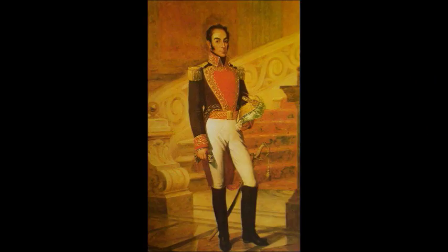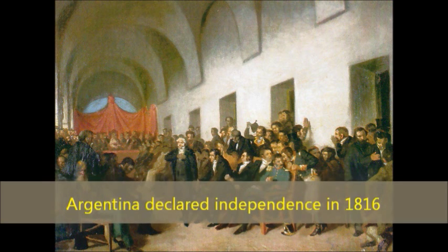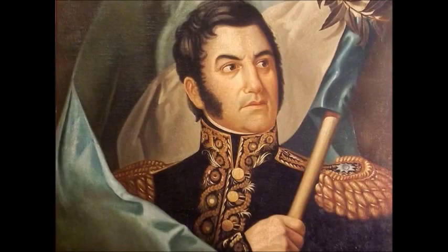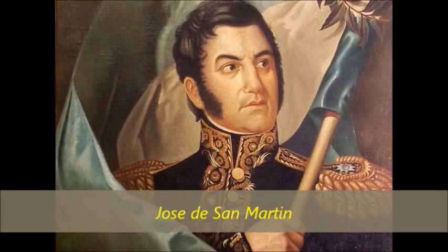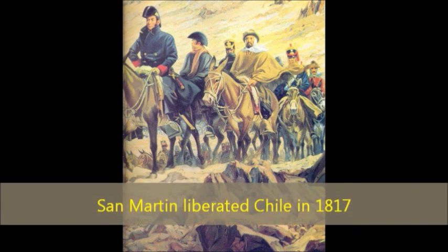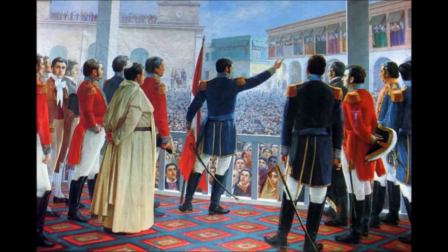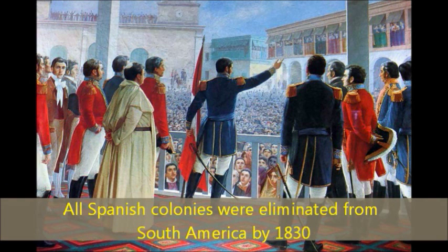After declaring their independence from Spain, Argentina knew the only way they could maintain their independence was to dislodge the Spanish from their other strongholds in South America. In 1817, troops led by General José de San Martín — a brave Creole who also studied in Europe — marched across the Andes Mountains to liberate Chile from Spain. José de San Martín was fantastically successful, and later, with the help of Simón Bolívar, he marched on the last remaining Spanish colony, Peru, in 1824. Under Bolívar's command, the Spanish were defeated in Peru, and the Spanish had no more colonies in South America.